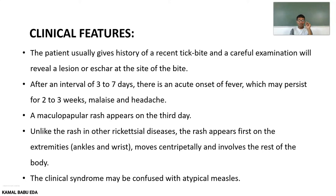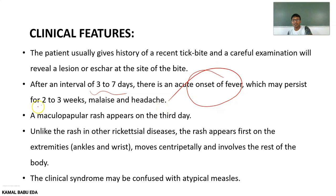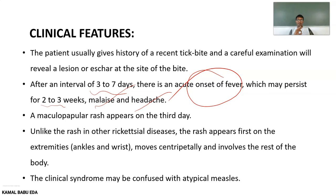Clinically, the patient will give a history of recent tick bite. Physical examination from head to toe will reveal the site of the bite. Symptoms appear mainly after an interval of three to four days, with acute onset of fever persisting for two to three weeks, malaise, and headache. On the third day, a maculopapular rash appears, which first appears on the extremities — mainly the ankles and wrists — and then moves centripetally to involve the rest of the body.